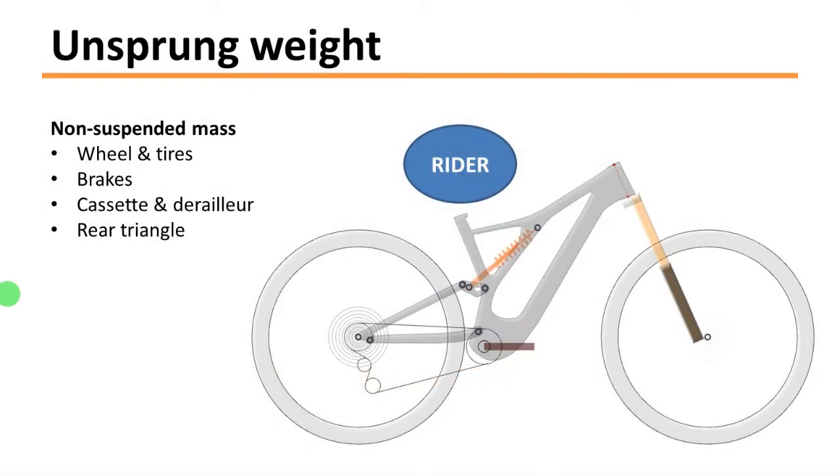So for those who don't know, the unsprung weight is basically the non-suspended mass of the rear suspension. We are talking about the wheels and the tires, the cassette, the brakes, the rear triangle, and that's the moving part of the suspension, so it's the unsprung weight.